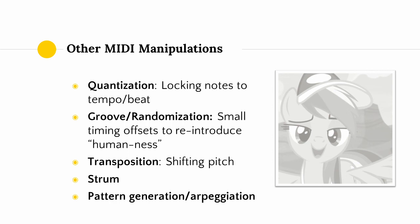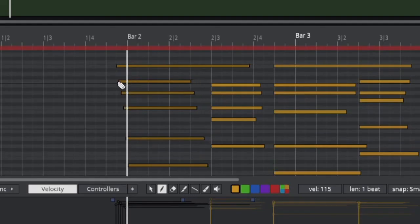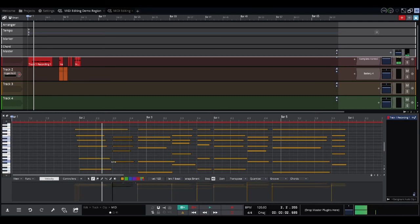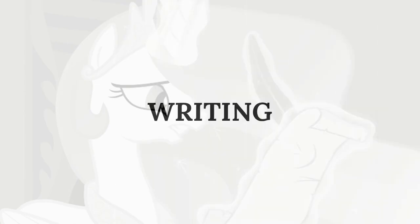Another MIDI manipulation that can be performed is transposing notes, essentially shifting them up or down in pitch. Yet another is strum, which takes notes played in a chord all at once and plays them at staggered times, much in the same way you would when playing a guitar. Some DAWs also have special functionality for pattern generation as well as arpeggiation, which allows you to play the notes of a chord in a predefined sequence or simply repeat the notes of a chord. Alright, I think I've covered everything for this MIDI editing section, so we will see you next time with writing.